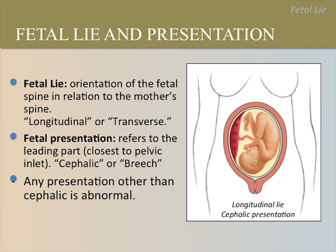There are a few terms to describe the orientation of the fetus in the uterus. The first term is lie, which refers to the orientation of the fetal spine in relation to the mother's spine. The lie can either be longitudinal or transverse. The next term is fetal presentation, which refers to the leading fetal part closest to the pelvic inlet. The fetal presentation can either be cephalic (head down) or breech (head up).